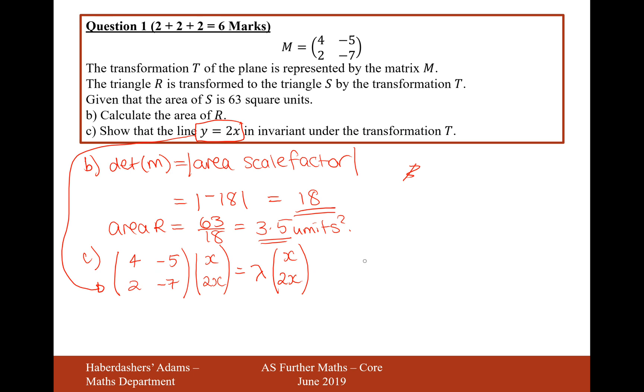So let's expand the brackets on the top. 4x minus 10x equals lambda x. So that will mean that lambda is equal to minus 6. Let's just check that that's the case on the bottom one as well.